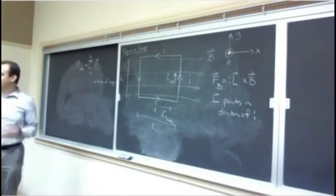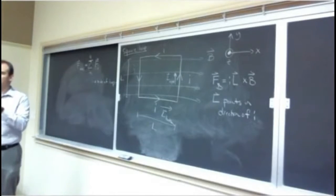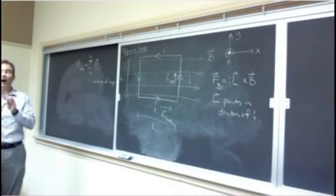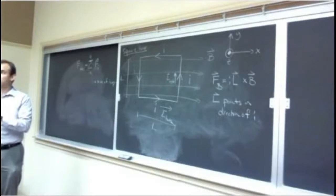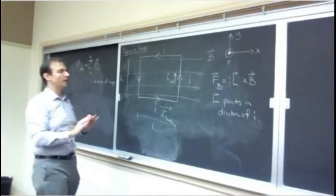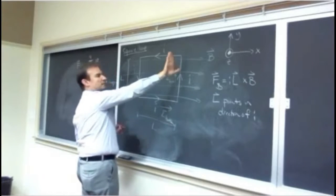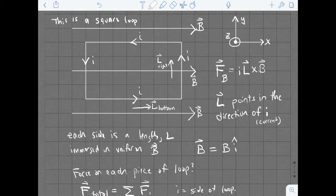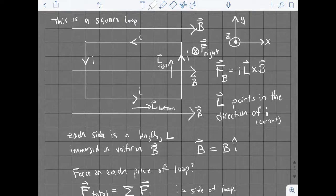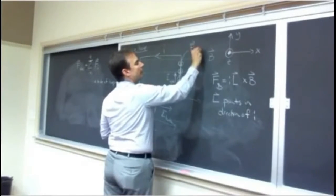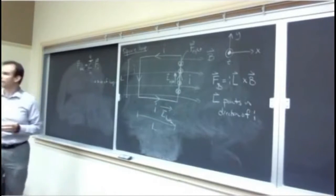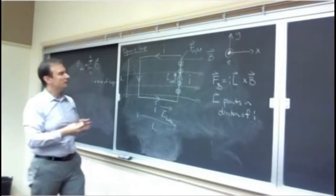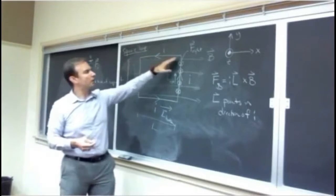Since current is defined as the direction positive charge flows, we're already dealing with positive charges and don't need to worry about a sign change as with qv × B. The current i is always defined in the direction positive charge moves, so that sign is taken care of. Applying the right-hand rule to the right side of the loop — tipping the palm to the right toward B — the thumb indicates the force points into the board. The force on the right-hand side points into the board.